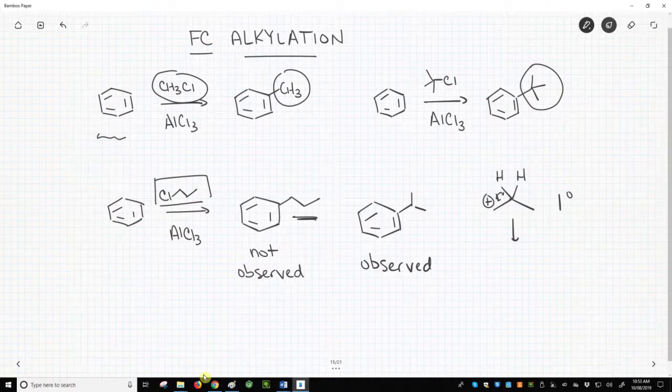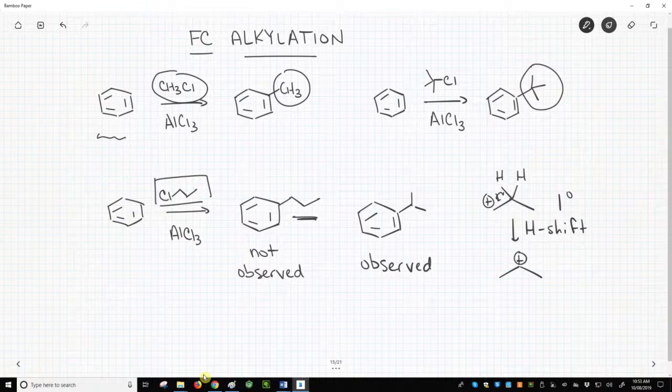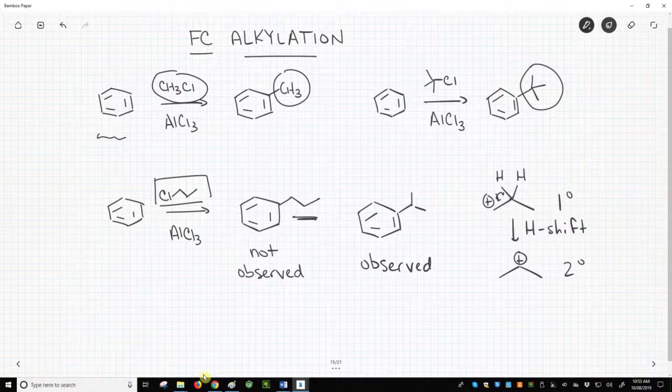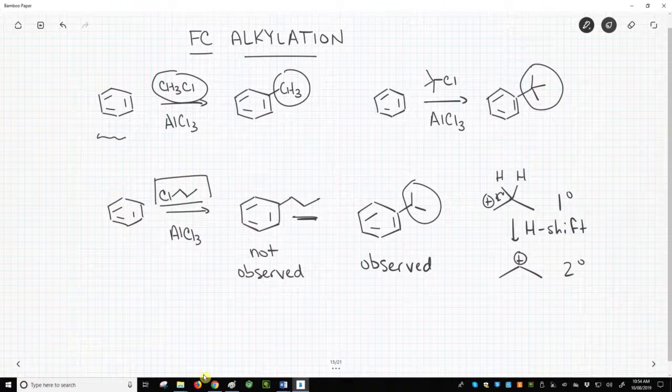undergo a hydride shift to form a more stable secondary carbocation. The secondary carbocation then serves as the electrophile, and we get an isopropyl group on our ring. The lesson here is to beware of hydride shifts and carbocation rearrangements.